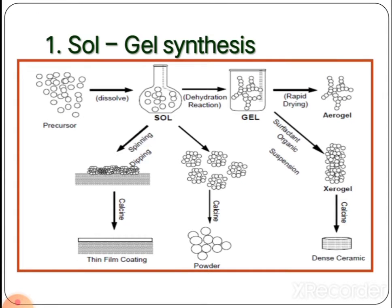Let us now discuss how to synthesize nano metals by the sol-gel method — this is the first technique in the syllabus. Concentrating on the flowchart of the sol-gel synthesis method: a metal alkoxide-based organic precursor is dissolved in a solvent, typically water, leading to form the sol. This sol is then further dehydrated, leading to the gel form.